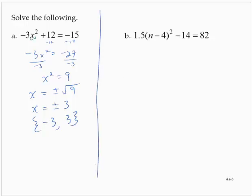Exercise b. I will try to isolate the variable quantity by first adding 14 to both sides. 1.5 times n minus 4 squared is 92.